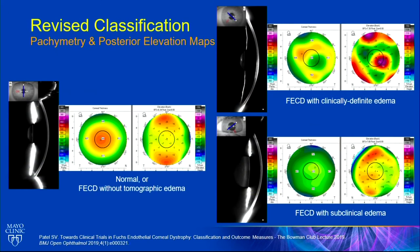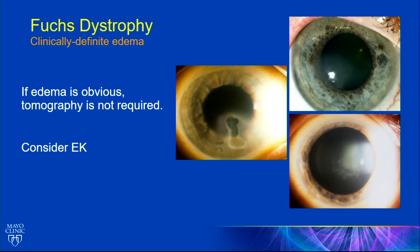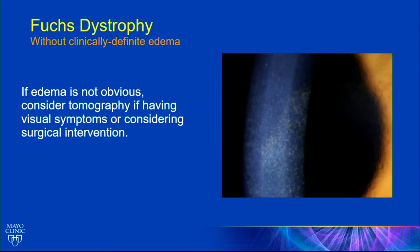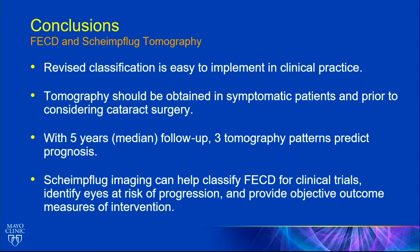What we recommend now is pachymetric tomographic analysis using Scheimflug imaging. The bottom line: if you see corneal edema, you know that patient needs treatment. But when you don't see corneal edema, get tomography and look for it — because it might be there, and if it is, it tells you the risk of progression or the risk of progression after cataract surgery. This revised classification is easy to apply if you have the imaging, it predicts prognosis, it's repeatable, and it will be important for future clinical trials.